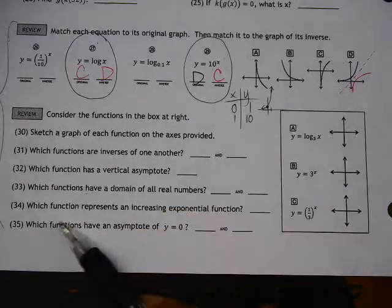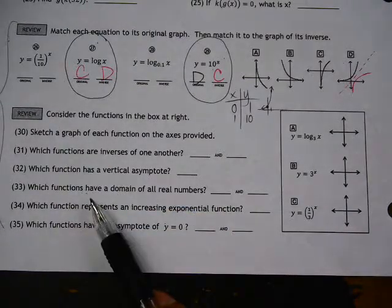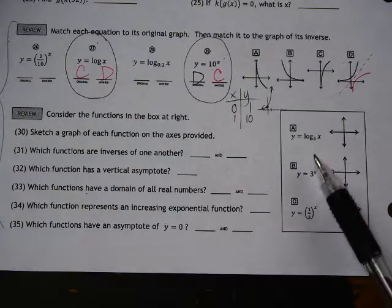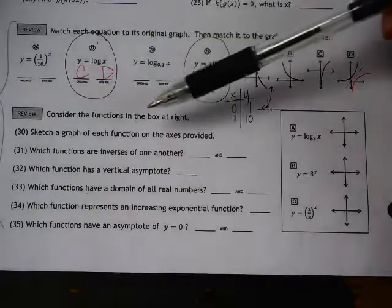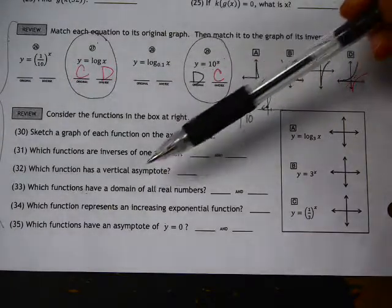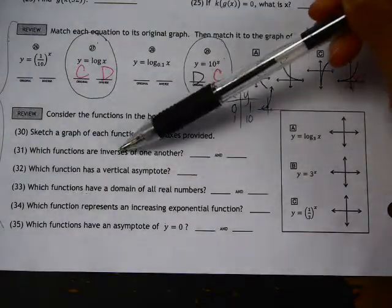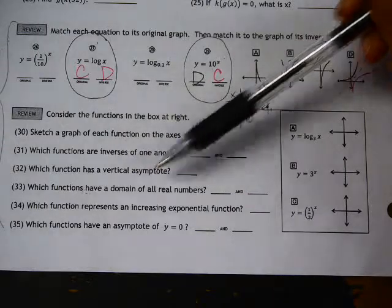Okay, we're going to look at number 30 through 35, which is graphing exponential functions as well as log functions, and also looking at some important information like domain and range and vertical asymptotes.